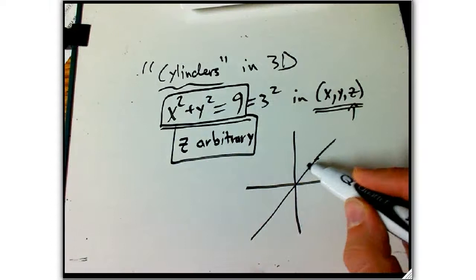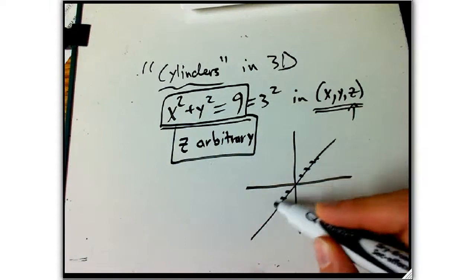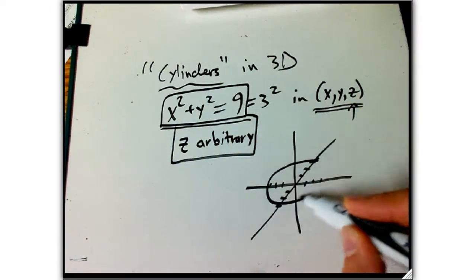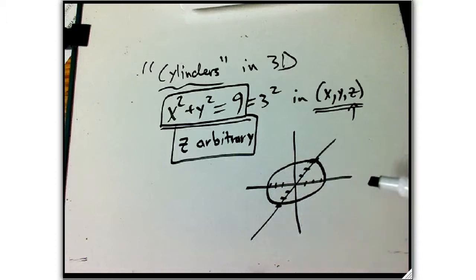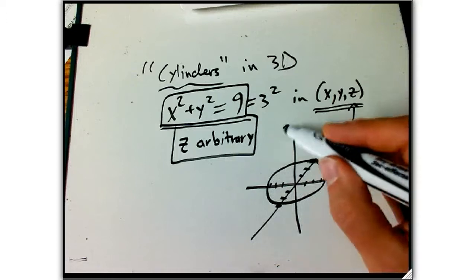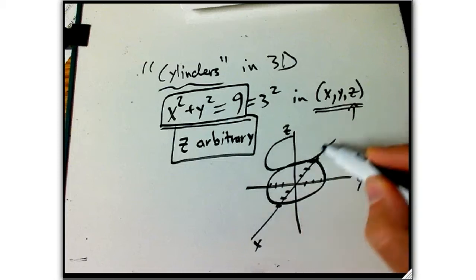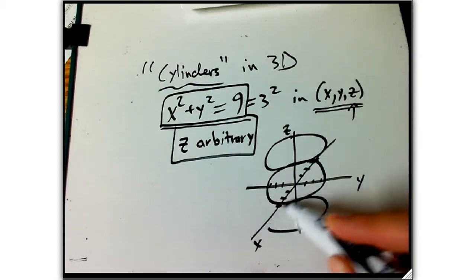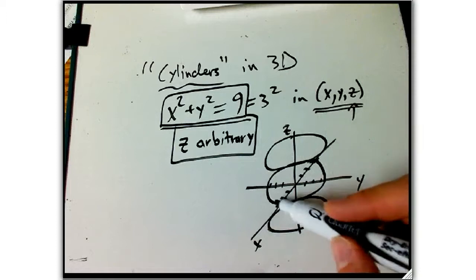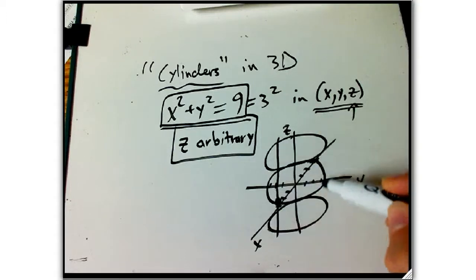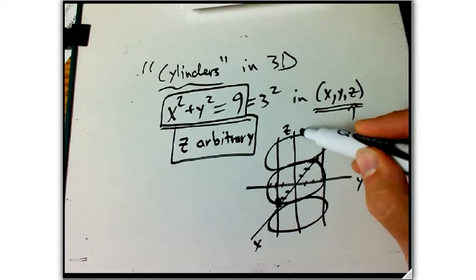Here's our standard way of doing the coordinates, but we could also have a circle of radius three above that with z equals five or something, or below it. We could have any of those guys, and for any point on the circle, z can be anything, which is going to create a line up and down, and so we're going to create a cylinder.